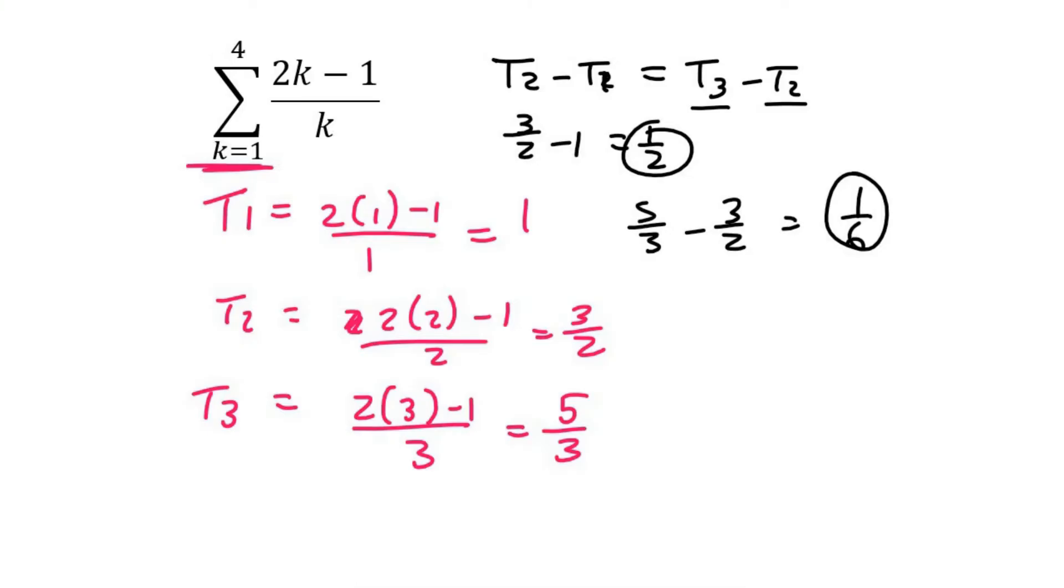Then let's check if it's geometric. For it to be geometric, the ratios should stay constant. So let's see if it does. If we say term 3, which is 5 thirds, if you divide that by term 2, which is 3 over 2, that gives us 10 over 9. Now let's check t2 divided by t1. So t2 over t1 would be 3 over 2 divided by 1, which is 3 over 2. So the ratio is not even constant.